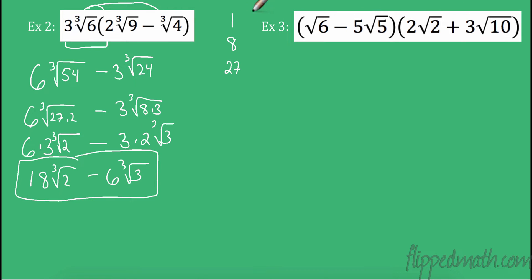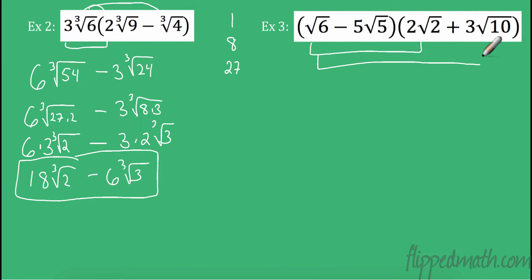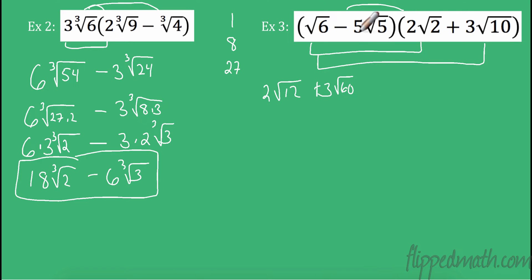Now we have a double distribution — a little bit more complicated. But this is nothing you haven't been doing since Algebra 1. The only real difference here is that we're doing it with radicals. So: 1 radical 6 times 2 radical 2 is 2 radical 12. 1 times 3 is 3, and 6 times 10 gives radical 60. That's the first distribution. Now distributing the second term — remember it's negative — so negative 5 times 2 is negative 10 on the outside, and 5 times 2 is 10 on the inside, giving negative 10 radical 10.